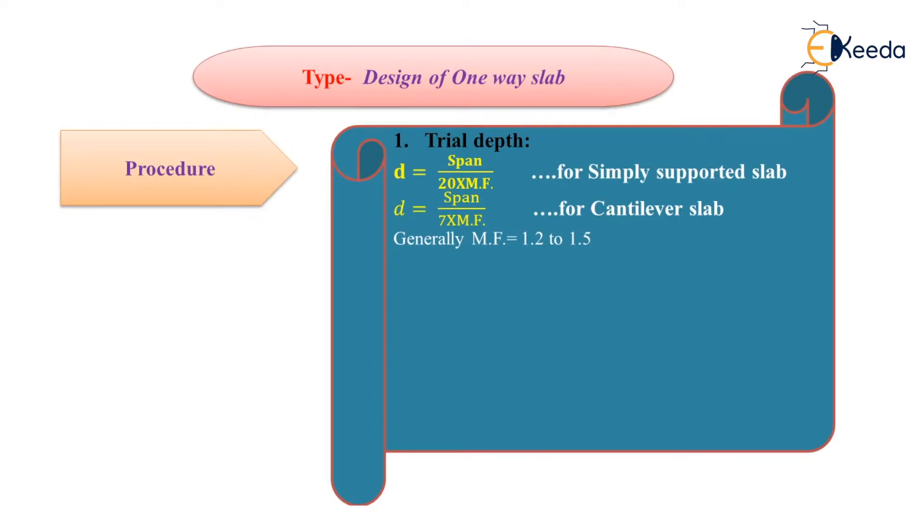Between these limits, we can take the modification value. Or simply you can calculate the trial depth for simply supported slab: D equals span upon 25. While for cantilever slab, D equals span upon 10.